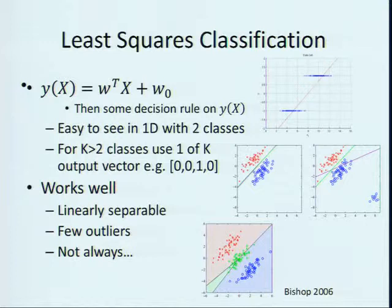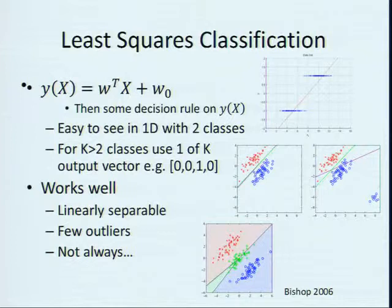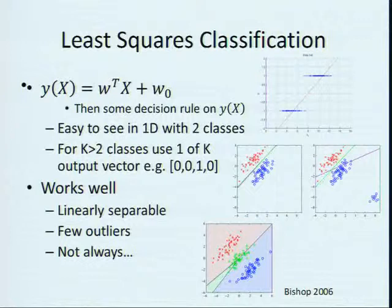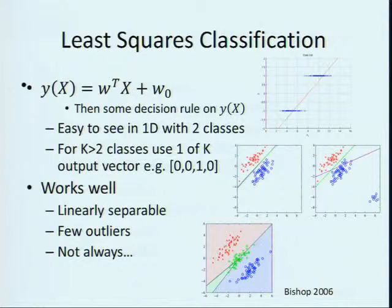For more than two cases, it's easy to use a one-of-k output instead of a single output. For example with four classes, class three would be coded as [0, 0, 1, 0]. Some problems with this approach are that it's weak to outliers — it doesn't perform well when points are far from their class mean. When you have outliers, the linear classifier doesn't do so well and starts misclassifying things, even though logistic regression can easily classify them properly.